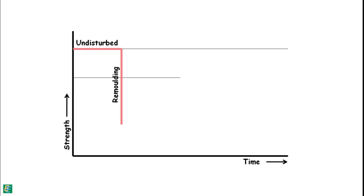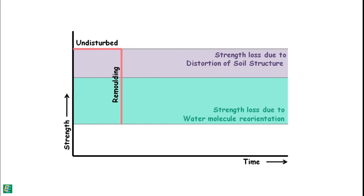Let us say this much amount of decrease in the strength is because of distortion of the soil structure and this much strength decrease because of water molecule reorientation. Now the soil is left alone for some time, then its strength will increase with time only because of reorientation of water molecules. And this much amount of strength is lost forever.